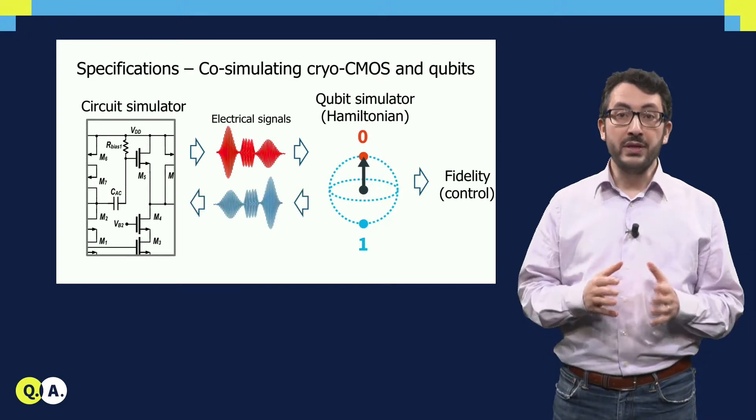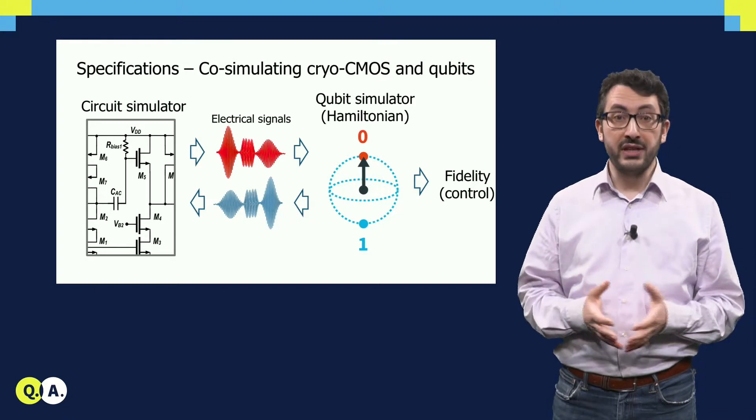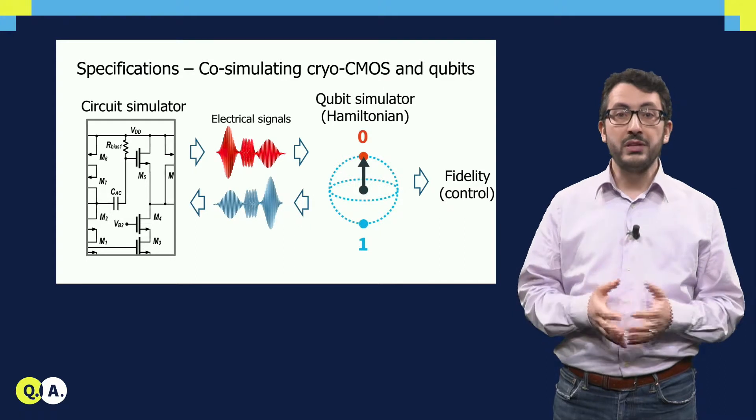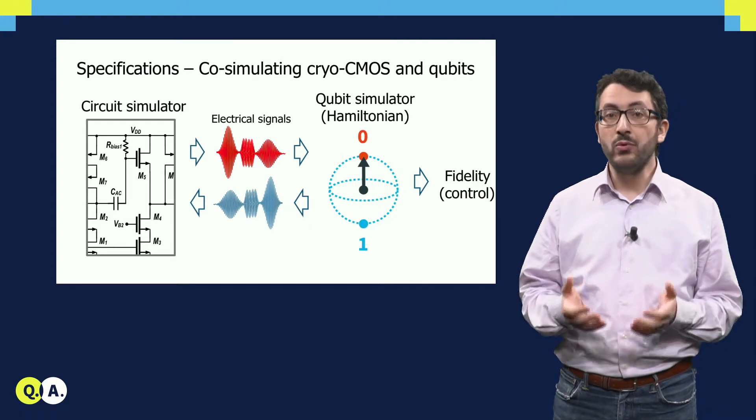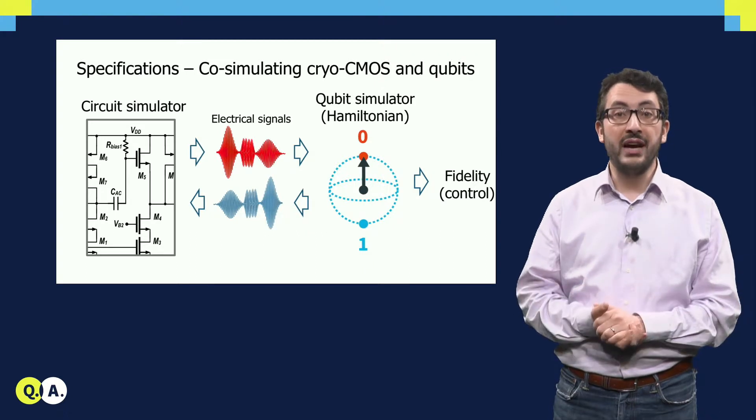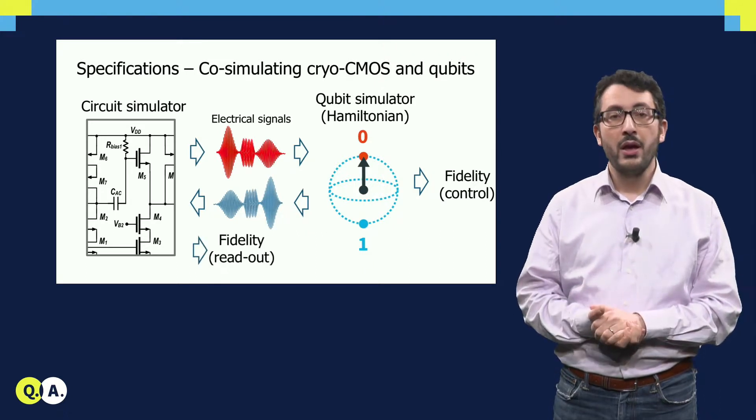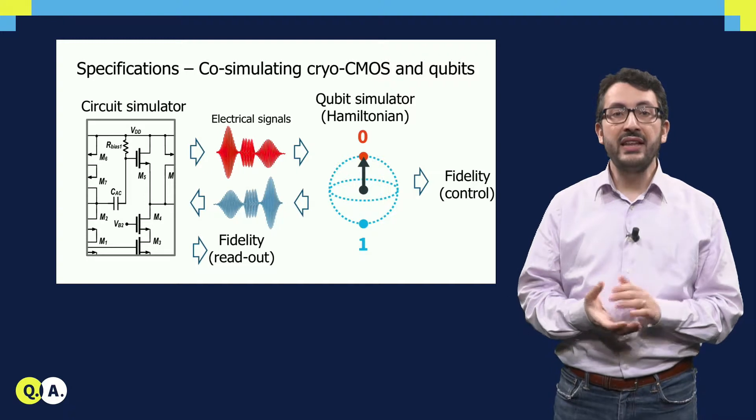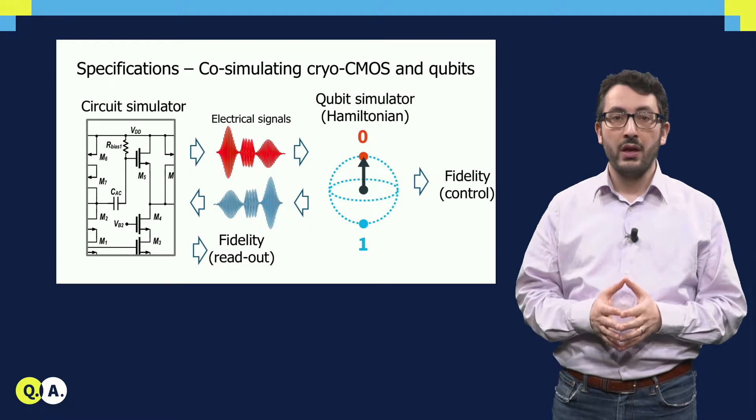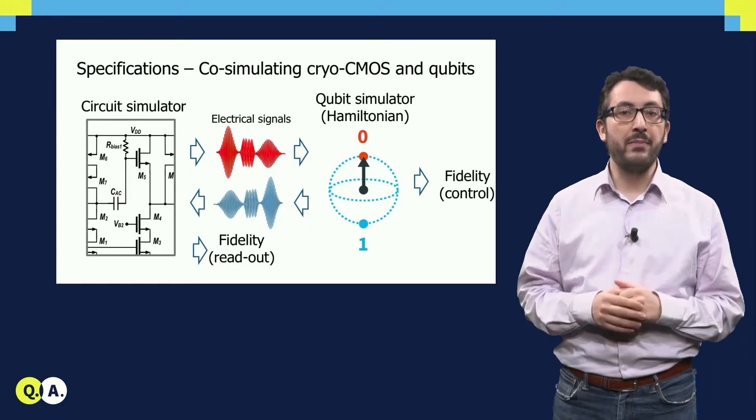Next, the qubit simulator can also produce the electrical signals generated by the qubits, and this can be fed to the circuit simulator to emulate or simulate the readout process and finally get the fidelity for the readout too. By doing this, the designer can really adapt the electrical circuits for the best performance of the full quantum computer.